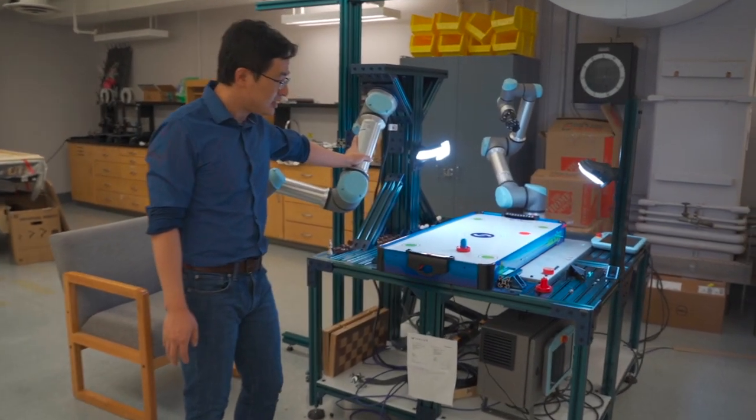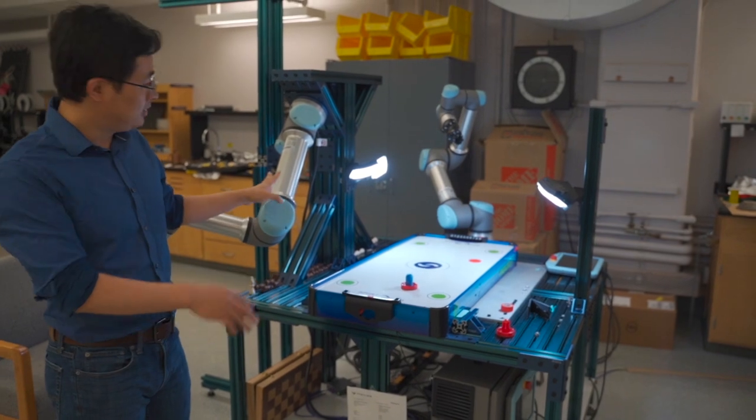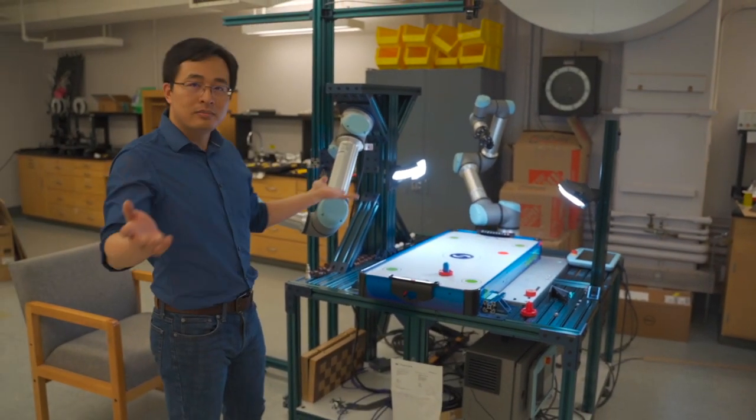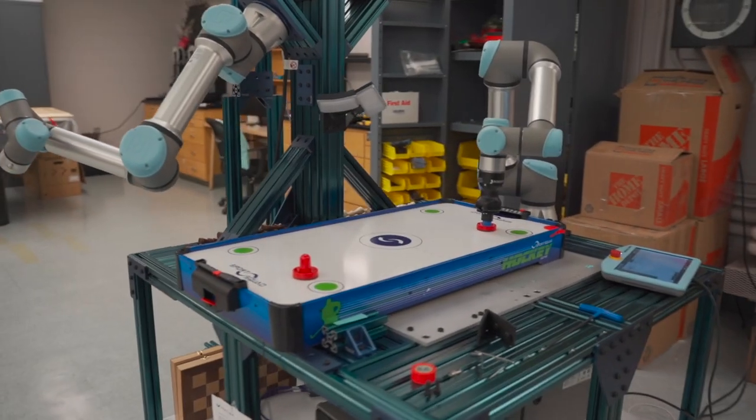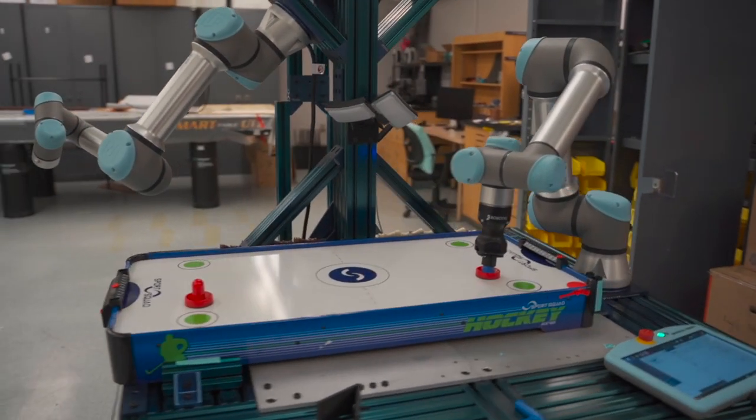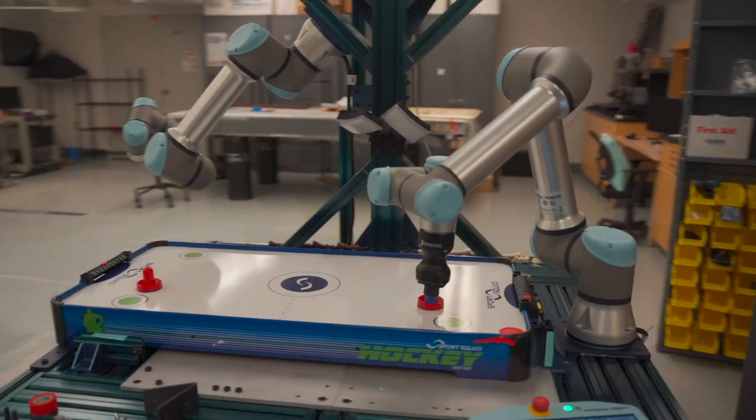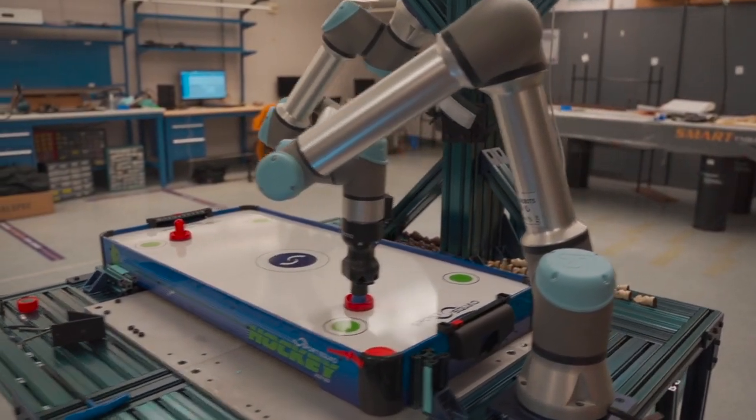This is, at the core, a two-armed robot that can do a couple of things. What you see here on display is a robotic hockey player. This is the most exciting project for me in the lab.